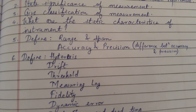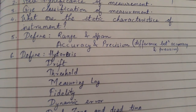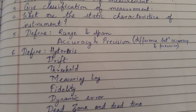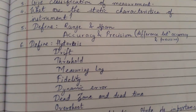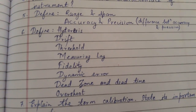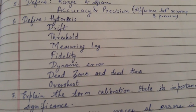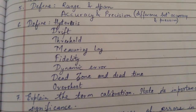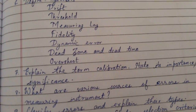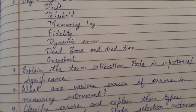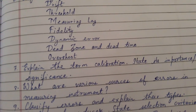Define hysteresis, drift, threshold, measuring lag, fidelity, dynamic error, dead zone and dead time, and overshoot. Also explain the term calibration and state its importance or significance.